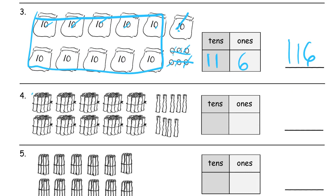And here we have ten groups of ten. And how many ones do we have? We have five, six, seven, eight, nine for one hundred nine.